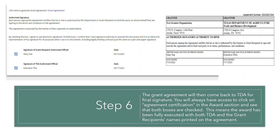The grant agreement will then come back to TDA for final signature. You will always have access to click on the Agreement Certification in the award section and see that both boxes are checked. This means the award has been fully executed with both TDA and the grant recipient's name printed on the agreement.